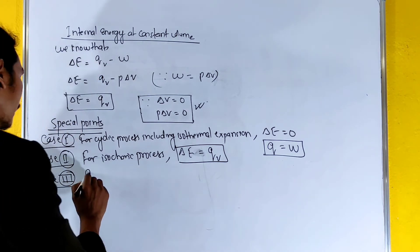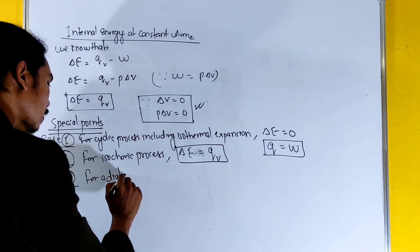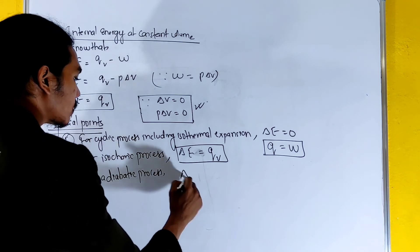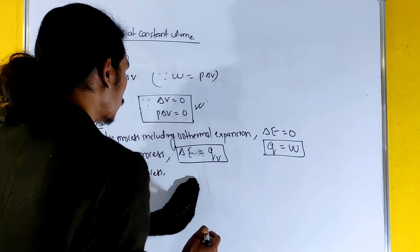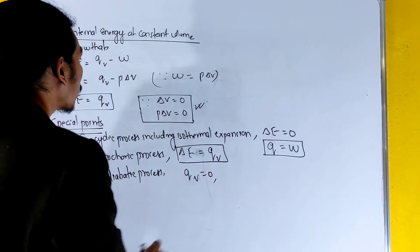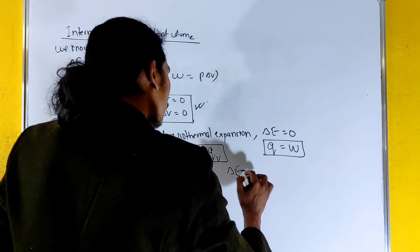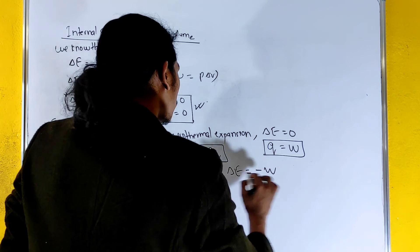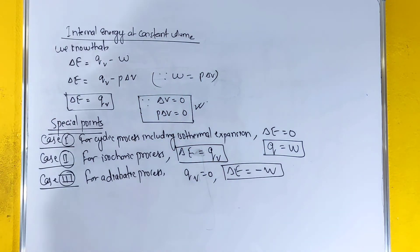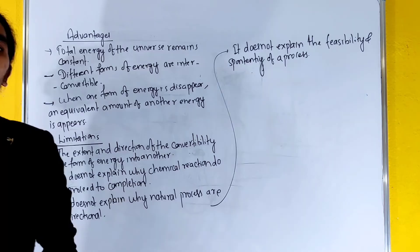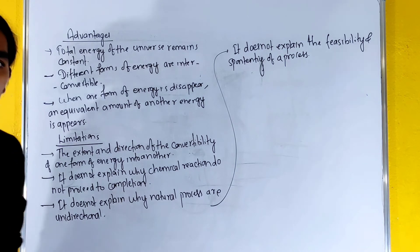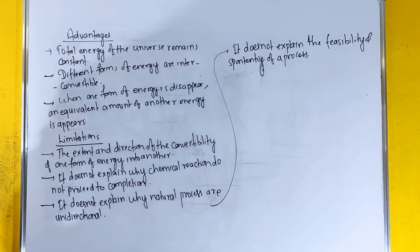For an adiabatic process, delta q equals zero, so delta E equals minus w, which equals minus p·delta V.